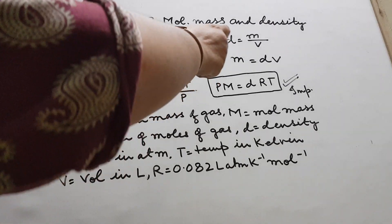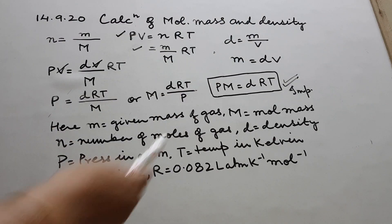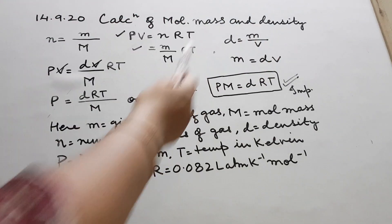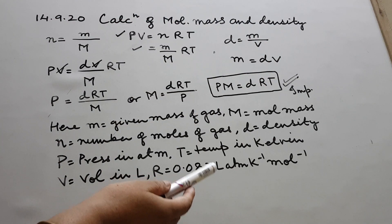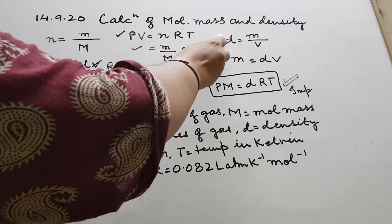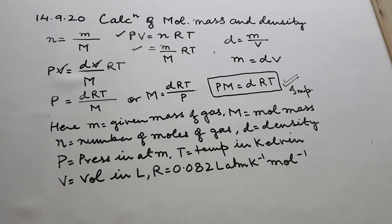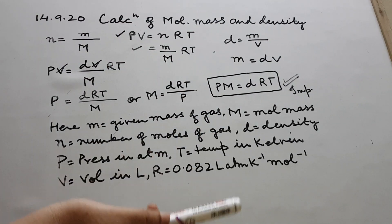We also know D = m/V, that is mass per unit volume. So I can say m = dV.